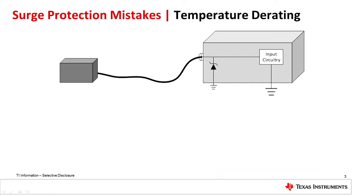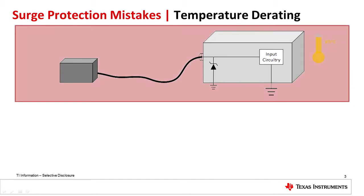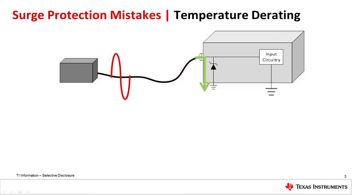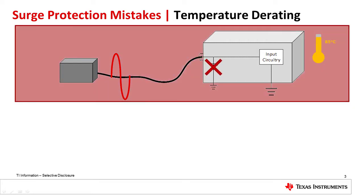The first common mistake is to ignore TVS variation over temperature. Most surge testing is done at room temperature, but real systems commonly see surge events at temperatures of 85 degrees Celsius or higher. Unfortunately, TVS diodes that can comfortably pass a surge test at room temperature offer no guarantees of passing at high temperature.